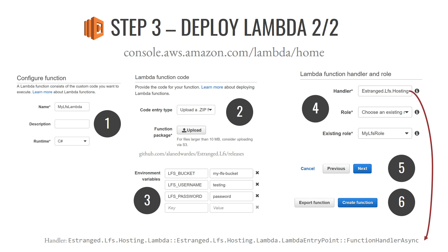The deployment package accepts a few environment variables. Set lfs_bucket to 'mylfs-bucket' — the bucket name we created in S3. Set lfs_username to 'testing' and lfs_password to 'password' — obviously just temporary for testing. Further down the page, for Lambda function handler and role: the handler is the long C# namespace shown at the bottom of the slide, which you can copy from the slides or the releases page. Paste that into the handler field — it tells Lambda where the entry point is in the C# code. For the role, pick 'mylfs-role' that you created previously, then hit Next and click Create Function.